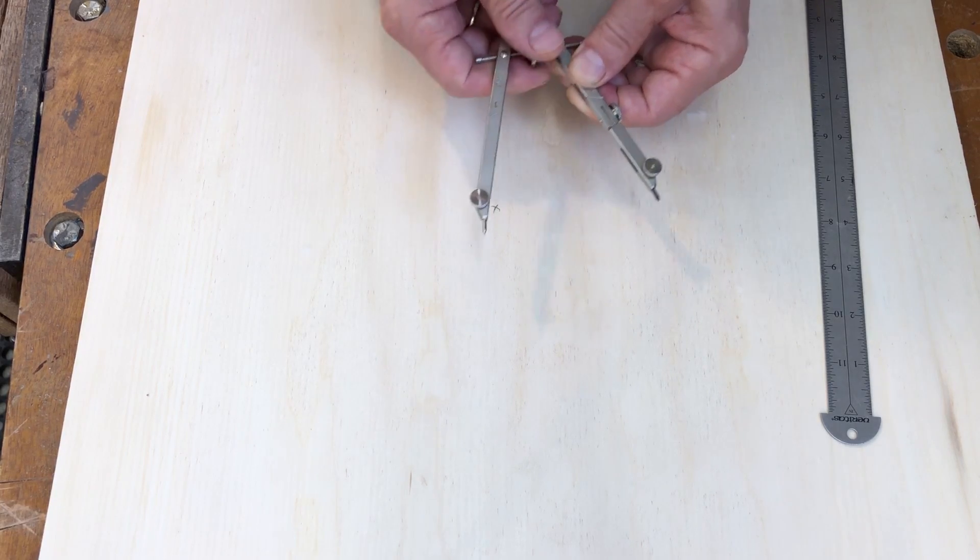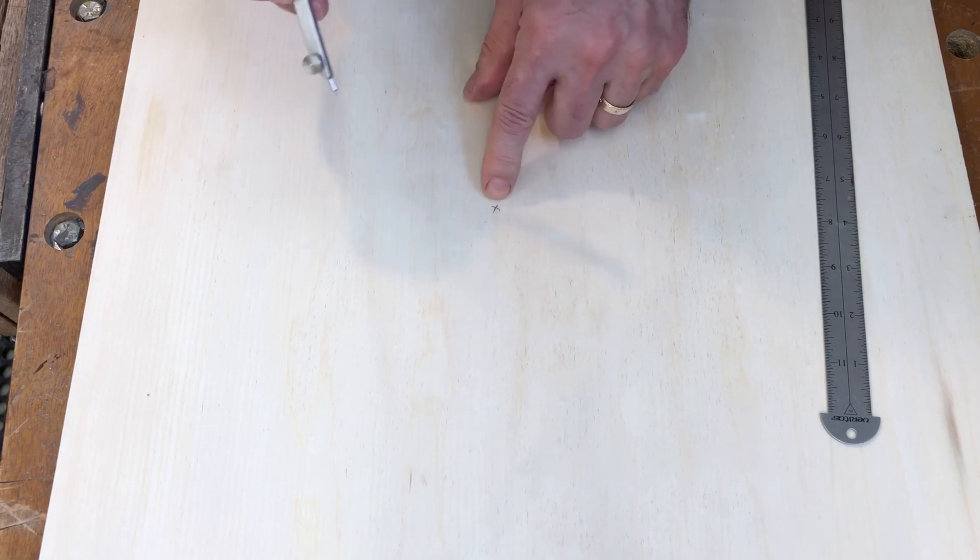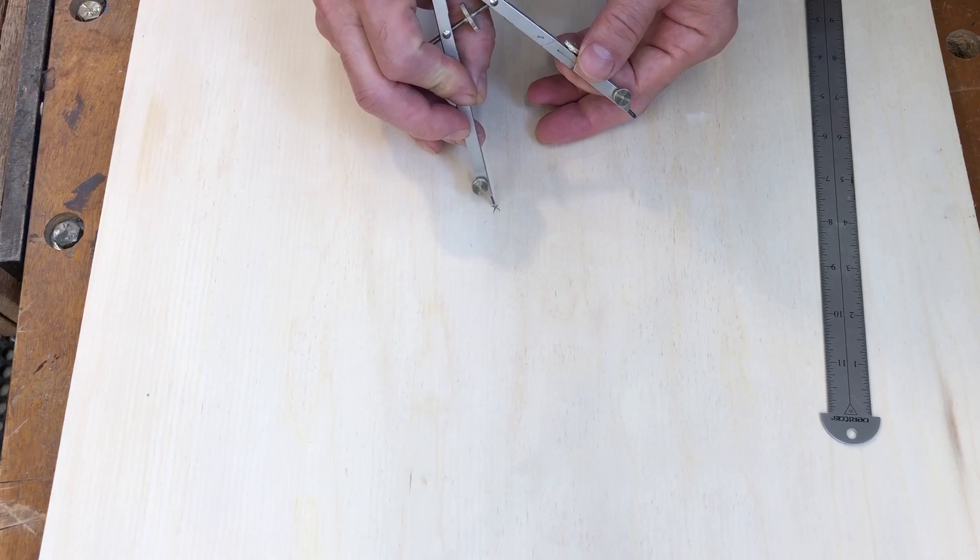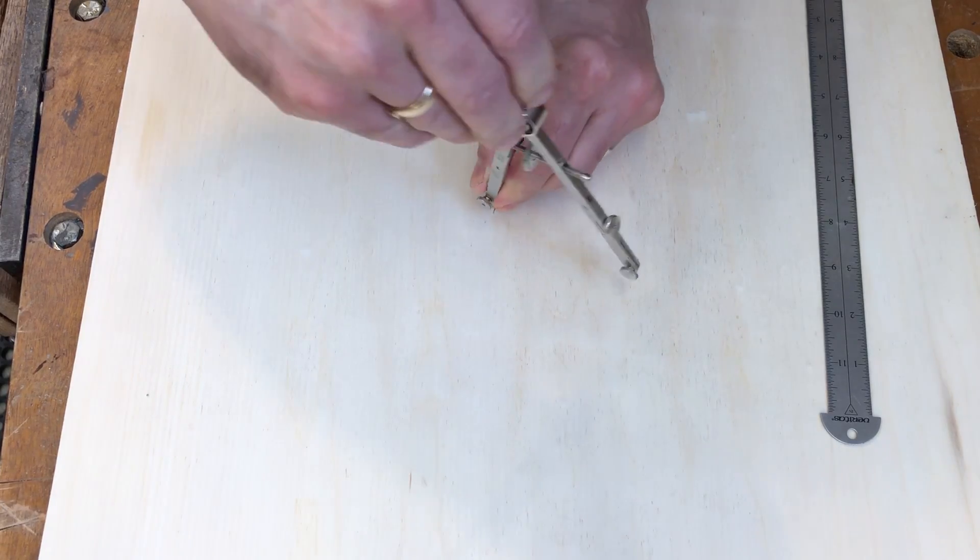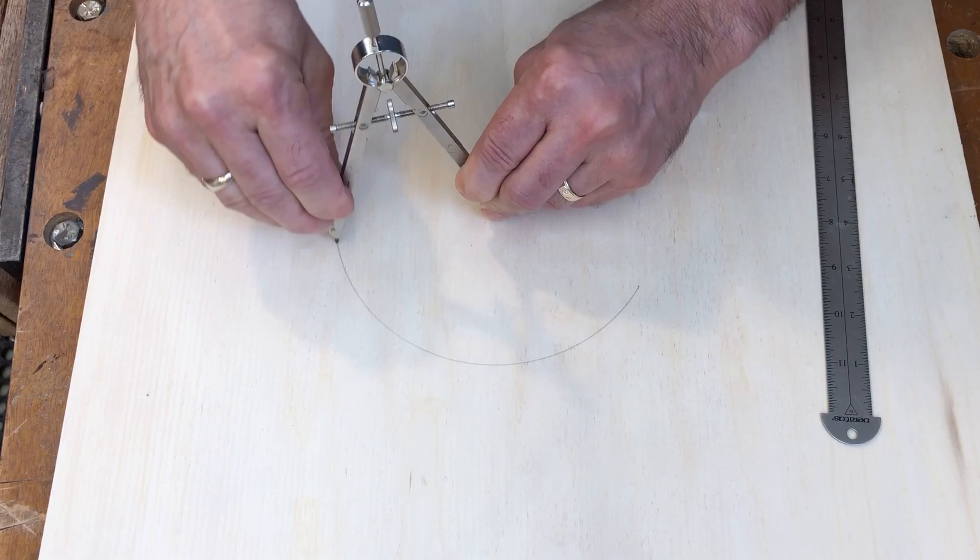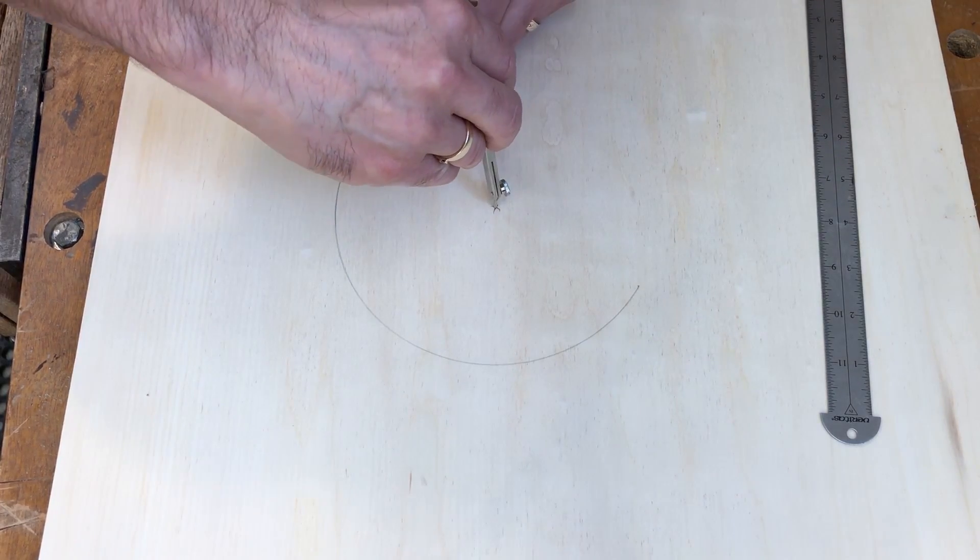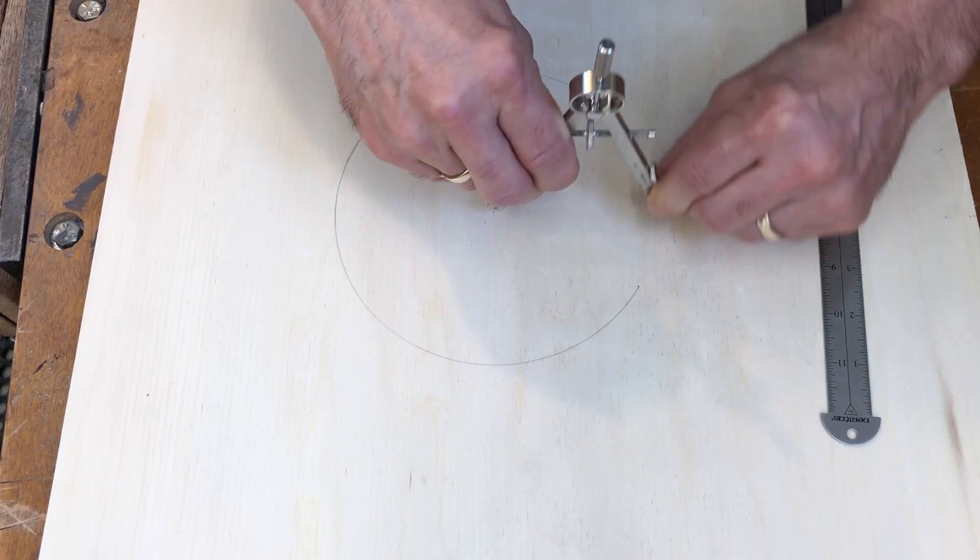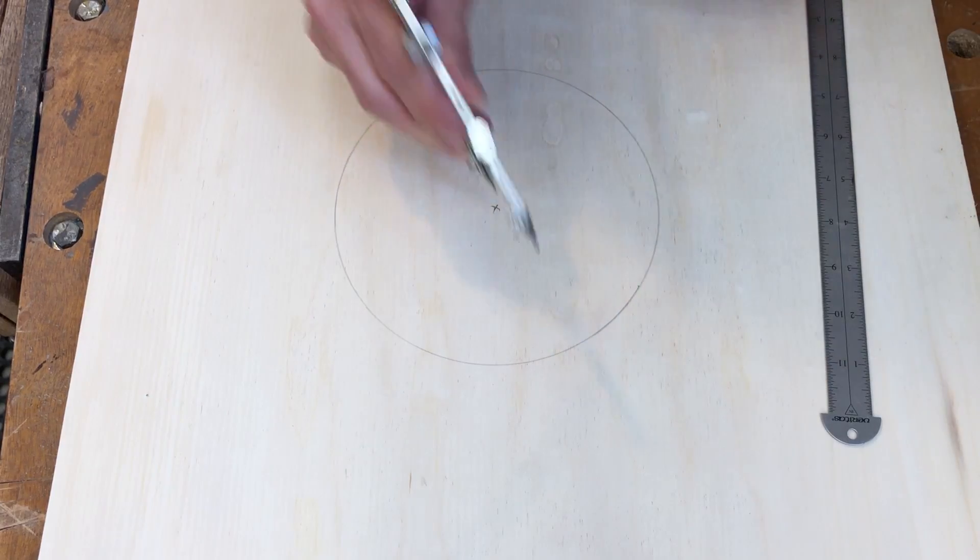So let's start by drawing that circle. I've just set the compass for an arbitrary measurement here. My center point for my circle, point goes there, and we'll just draw the circle. I'm going to press down here a little bit so you can see it better on the video. Get a dark line. So there's a circle.